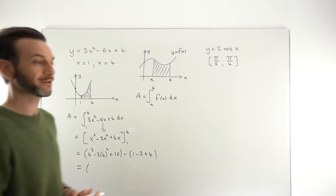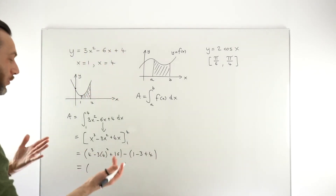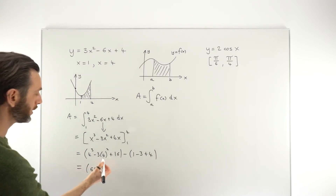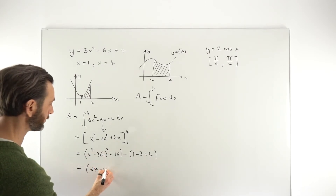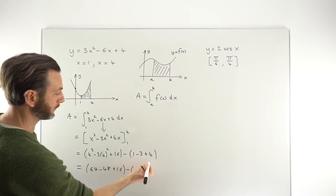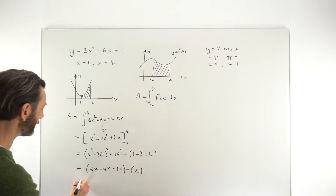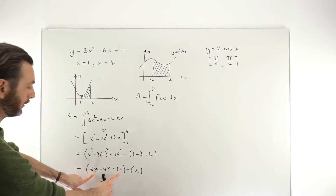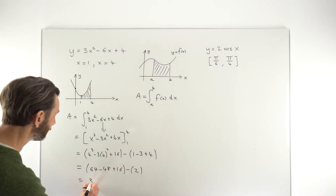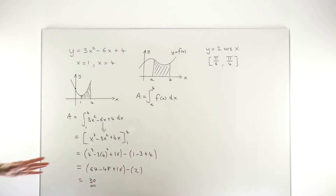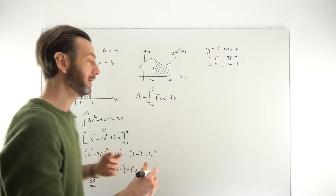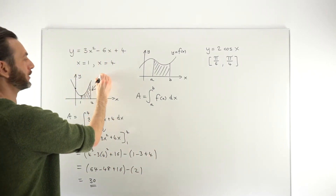Then it's just a case of evaluating the numbers — do this carefully. Sometimes these are calculator questions, sometimes non-calc; if it's non-calc, just be careful with the numeracy. So: 4 cubed is 64; 4 squared is 16 times 3 is 48, so that's minus 48 plus 16. This is going to be 5 minus 3, which is 2. That gives us 80 minus 48 is 32, and 32 minus 2 is 30. So, the answer comes out to be 30. If this was just a definite integral, that would be your final answer. But we're interpreting this result as the area, so this tells us that this area here is equal to 30.